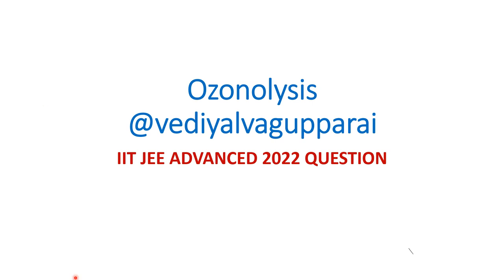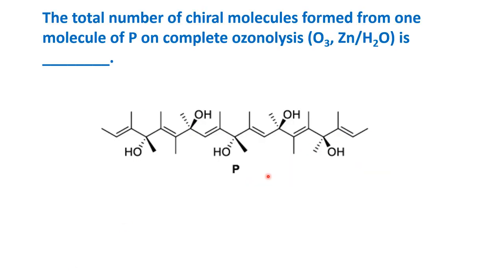Hello, welcome to Radial Bhagaparai. In this video, we will have an ozonolysis question. This is the JEE Advanced 2022 question paper. The question is: the total number of chiral molecules formed from one molecule of P on complete ozonolysis is?